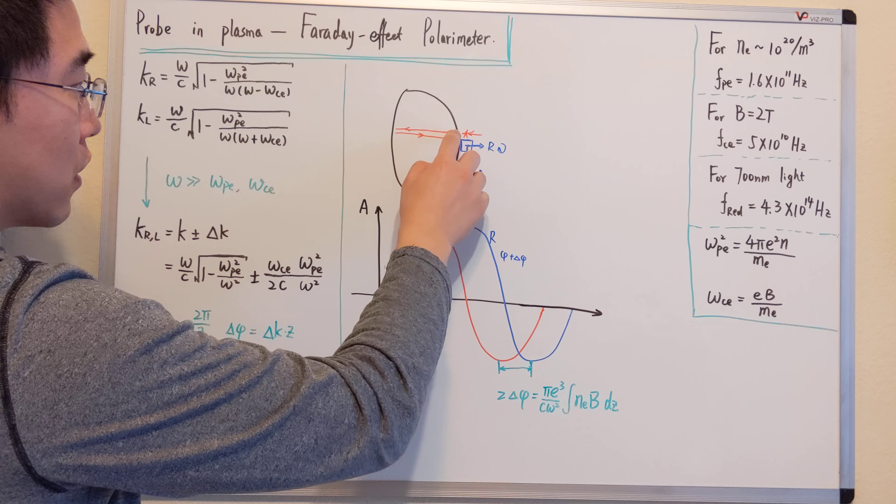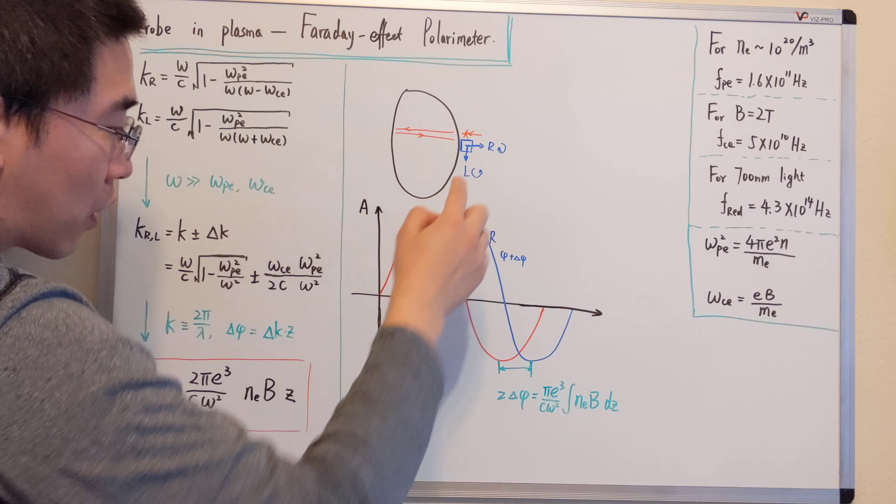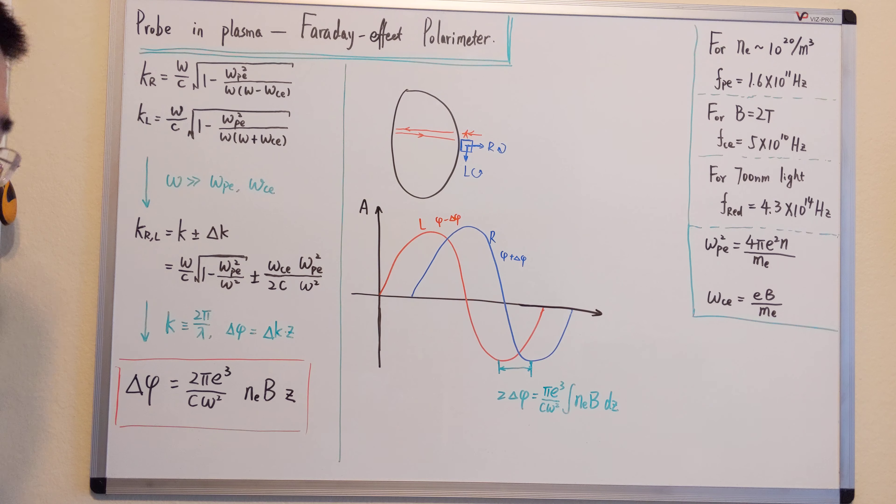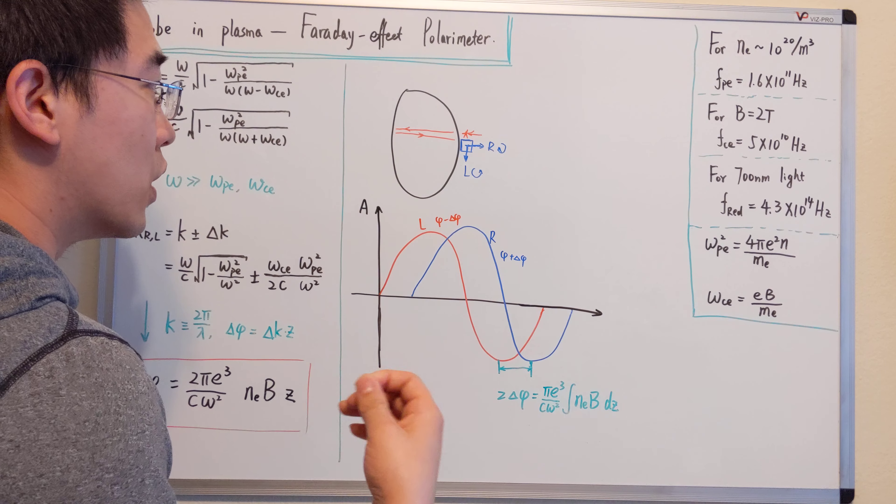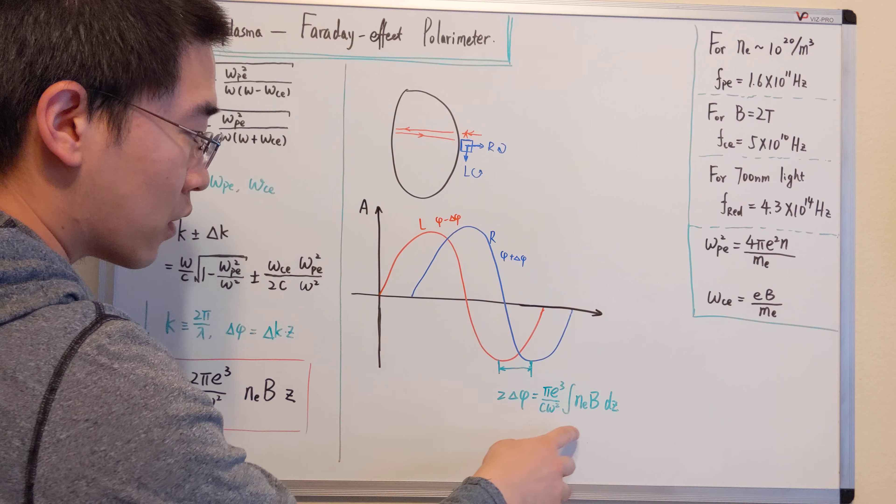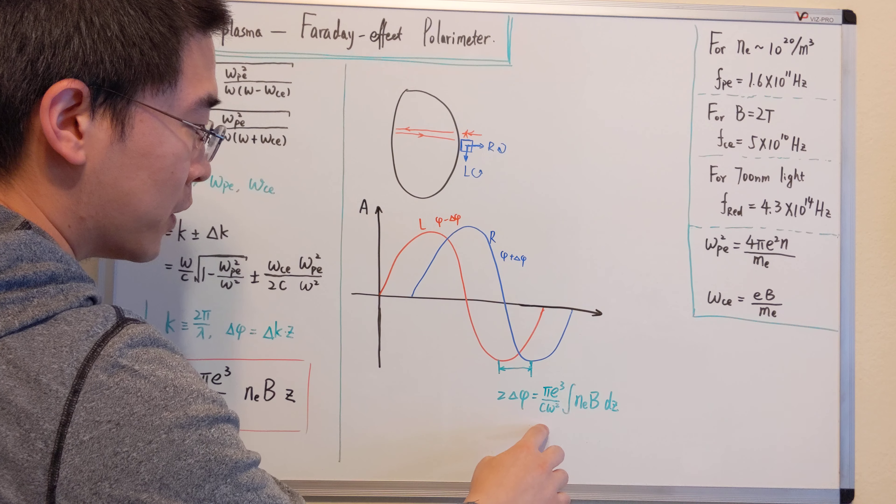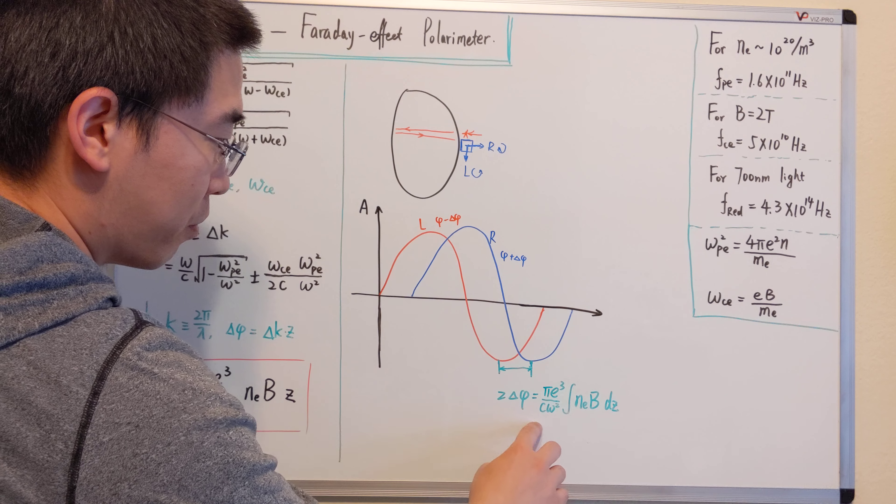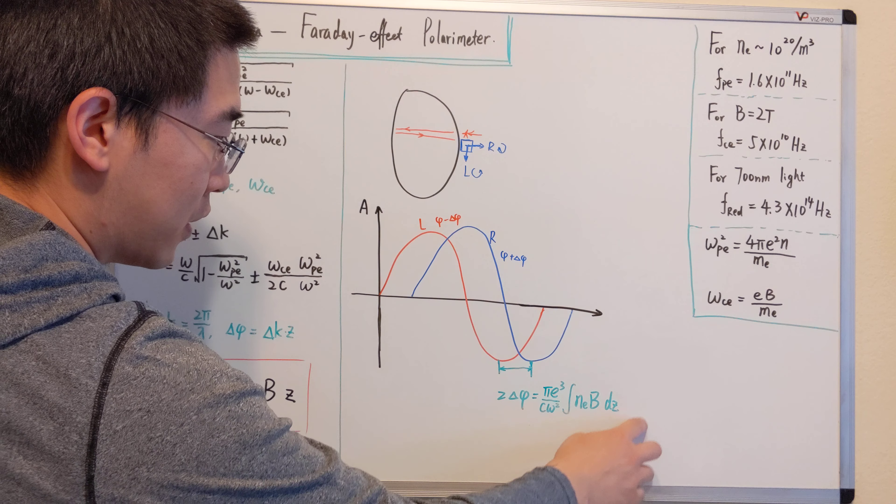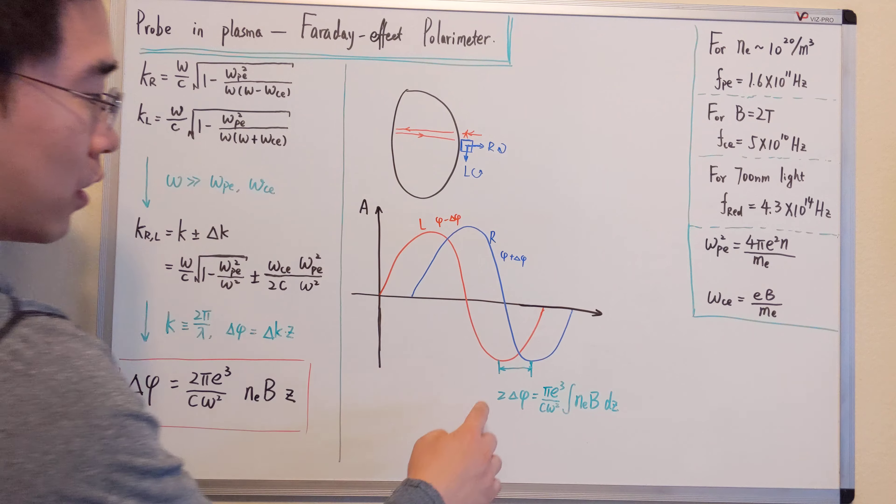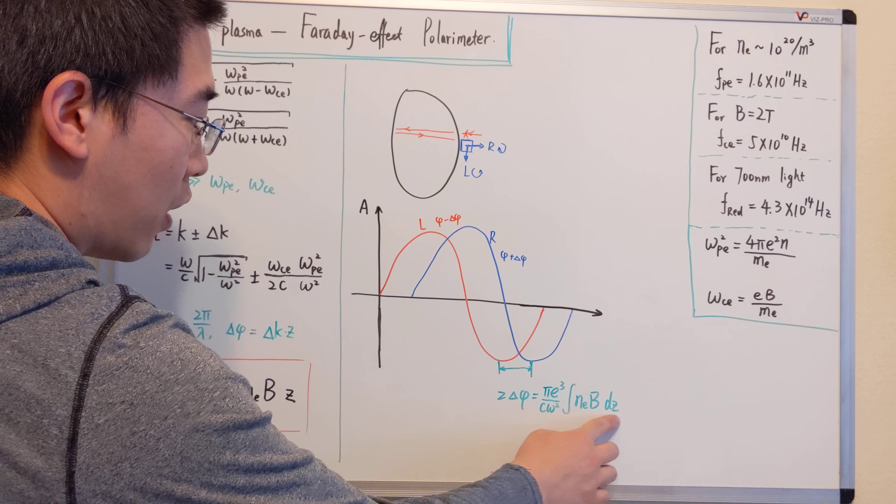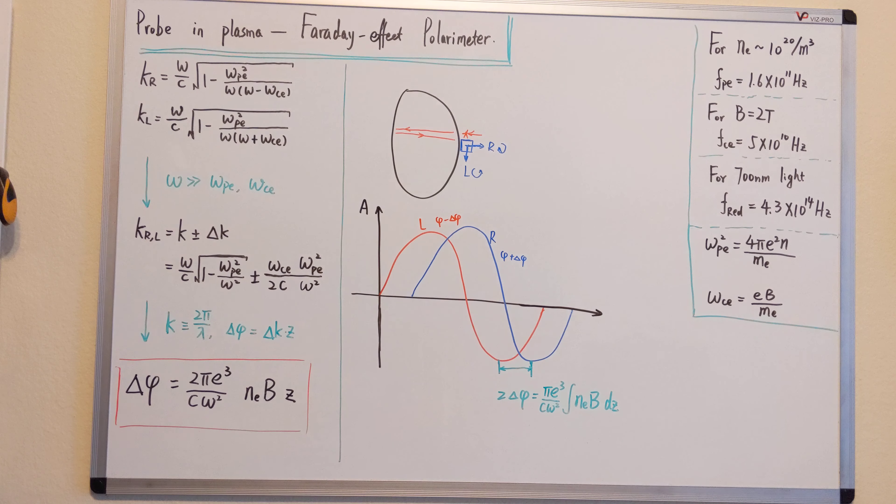And for this, the length that travels across, the density and the magnetic field might not be constant over the location. So we do a line integral. And then the phase difference will be basically this quantity. So basically we can extract, we can know a little bit more of a density weighted magnetic field.